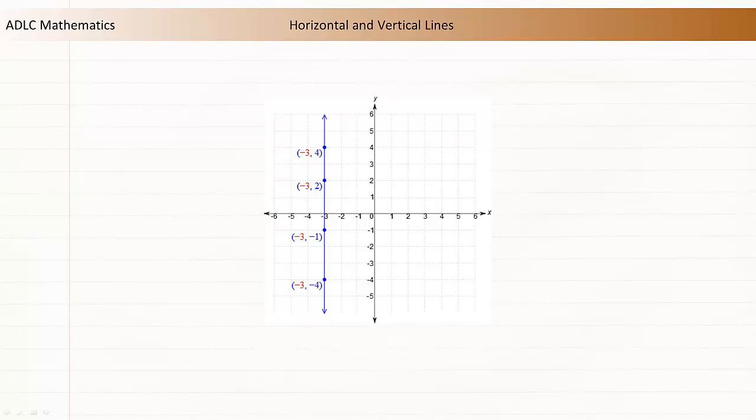Each point on this line has an x-coordinate of negative 3. The y-coordinate has no effect on the x-coordinate, so the equation of a vertical line can be written using just x. The equation corresponding to this line is x equals negative 3, because each x-coordinate is negative 3.